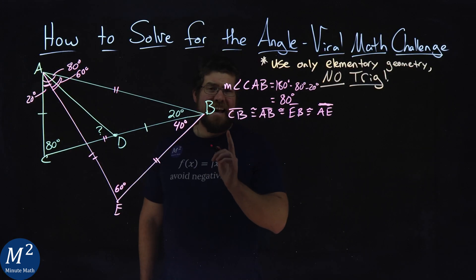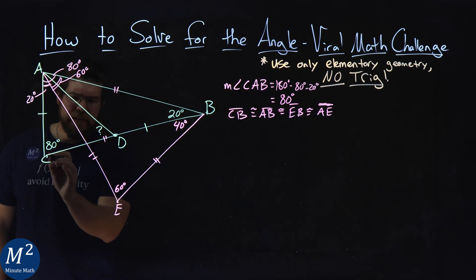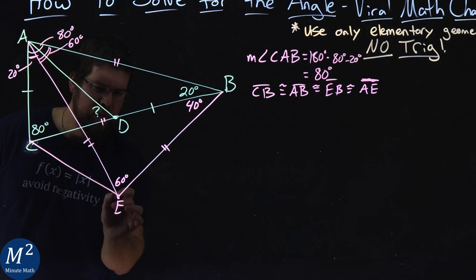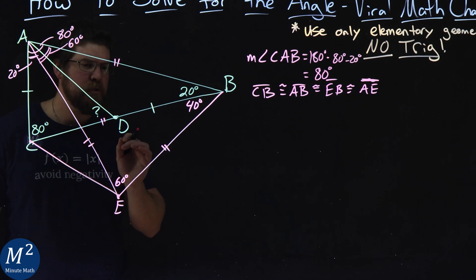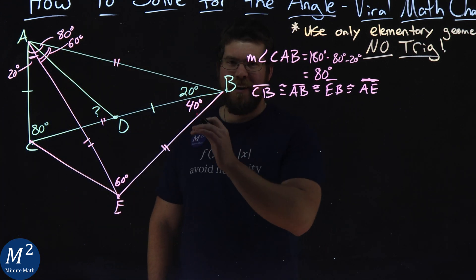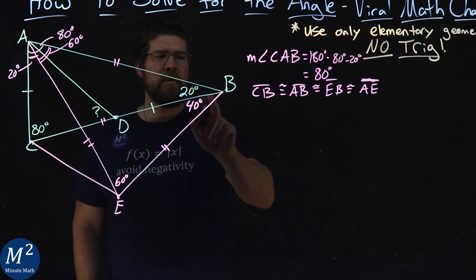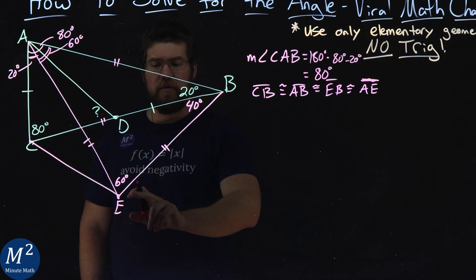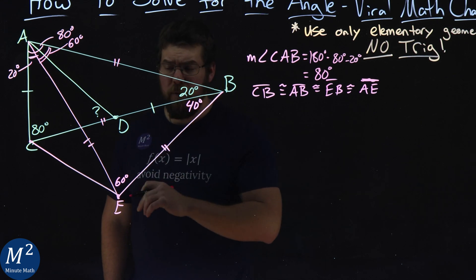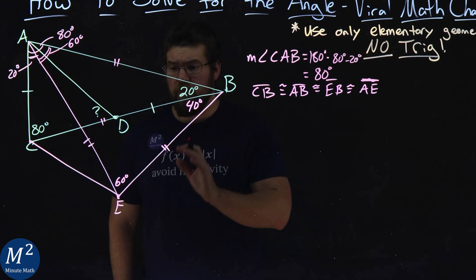Now I'm going to add another line connecting C to E. I know that length CB is equal to length EB — they're congruent — meaning triangle CBE is an isosceles triangle.